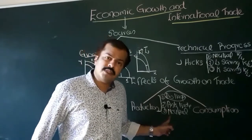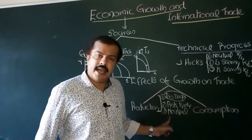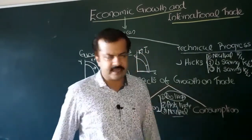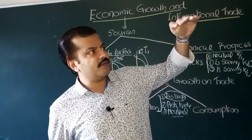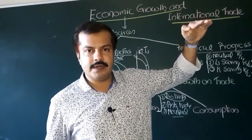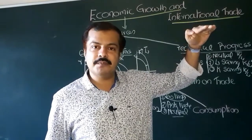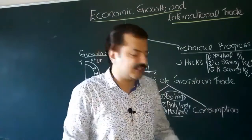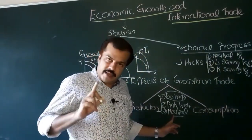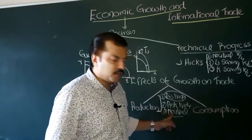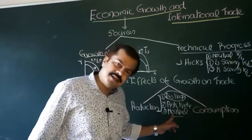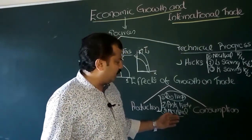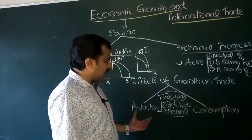When the production of both exportable and importable commodity increases in the same proportion, we will have a neutral effect — this is a very rare case. When production of exportable commodity increases, it promotes trade, and when production of importable commodity increases, it reduces trade — these two effects neutralize each other. So when output of both exportable and importable commodities increases in the same proportion, we have a neutral effect. Now let us explore consumption.